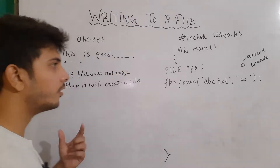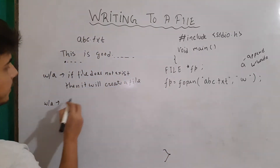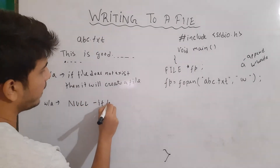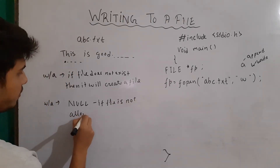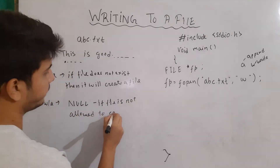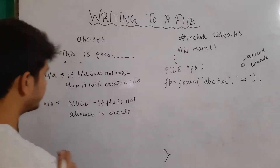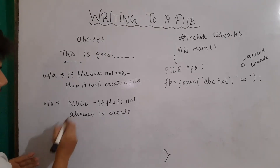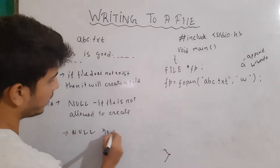Now, let's say that you don't have permission to create the file in that directory. In that case, our fopen will return us null. Basically, if the file is not allowed to be created, or similarly if the file exists but you don't have the permission to write any content in it, then it is again going to return null — no write permission.